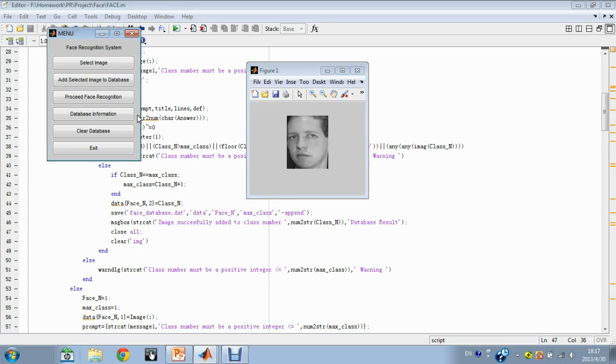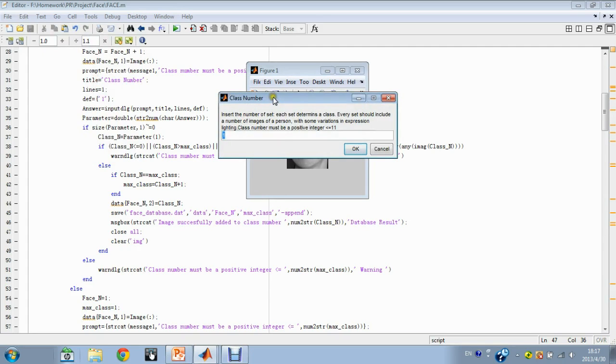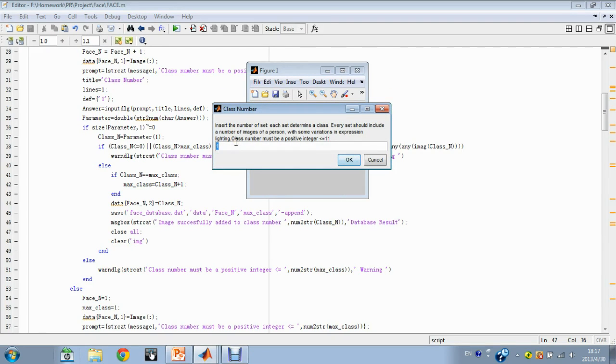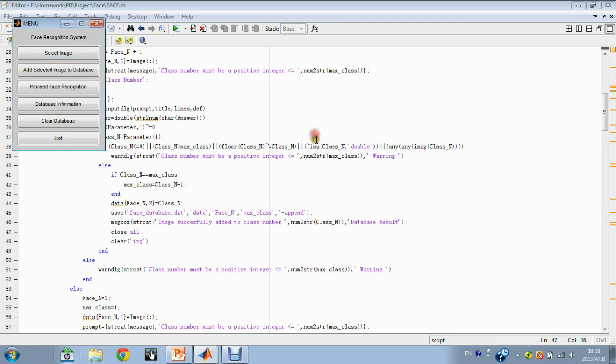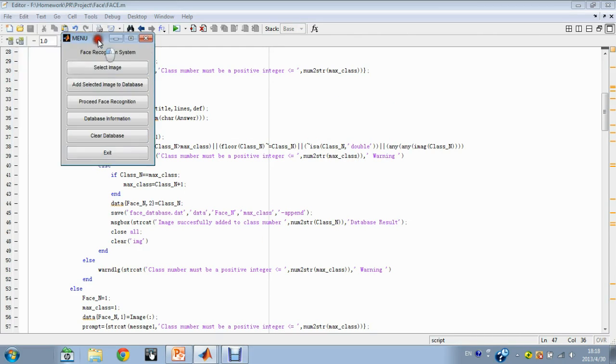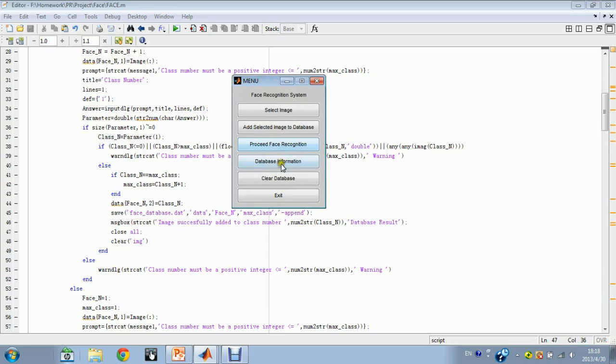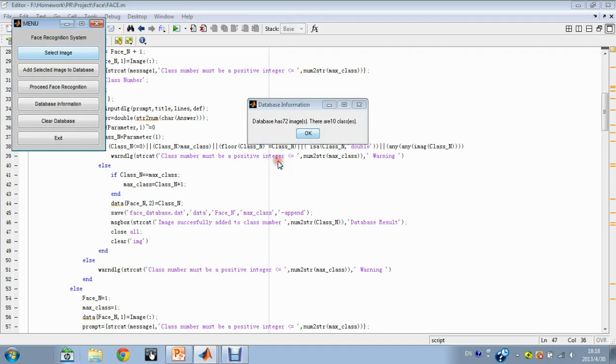You can add this image into the database. The class number is given according to different individuals. Every class contains a few images of the same person with different expression and lighting. I have used more than 70 images from class 1 to class 10 as the training samples. You can see the information about the database by clicking database information. There are 72 images and they belong to 10 classes.